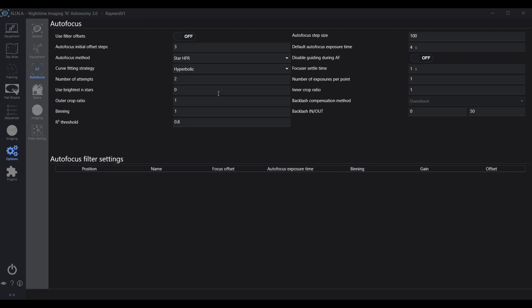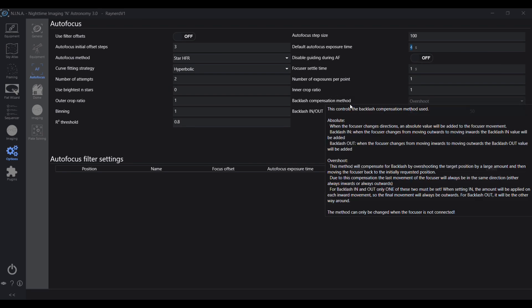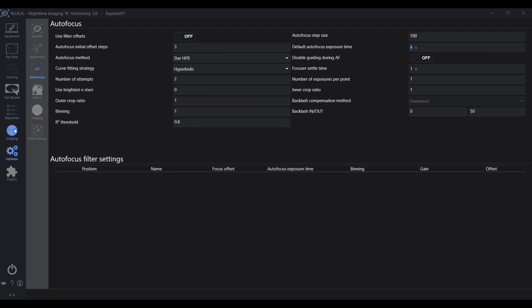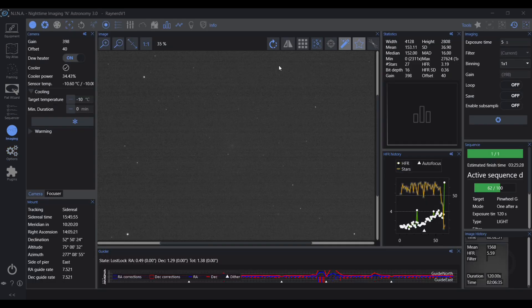The important one though is the autofocus step size. I changed that to 100 and worked out that I got a bit backlash over around 50 steps, which I've also input in there. So now on the imaging tab, there is autofocus at the top right-hand side.